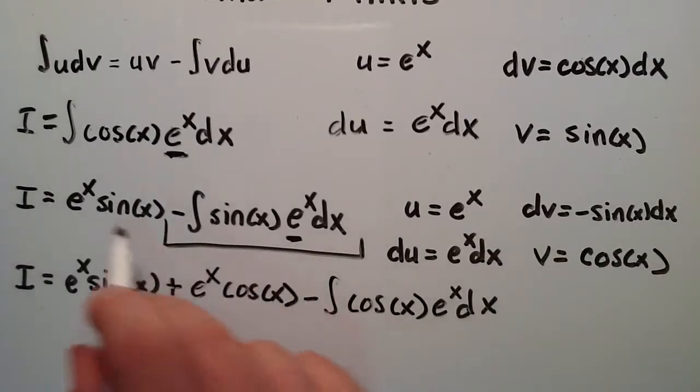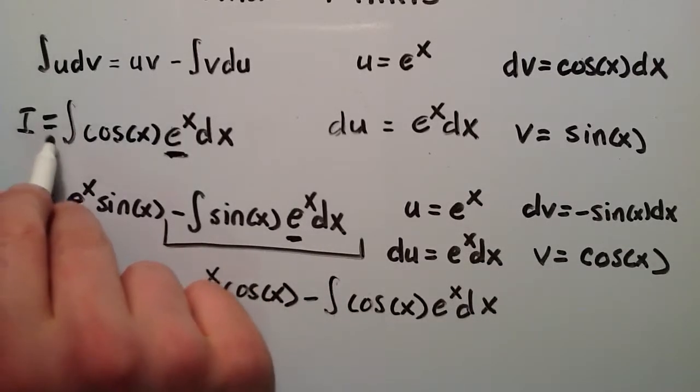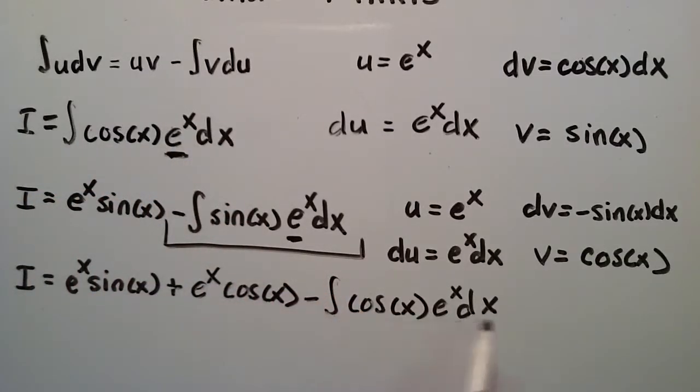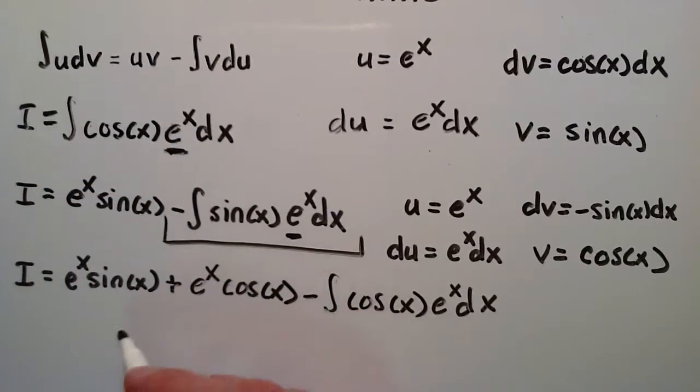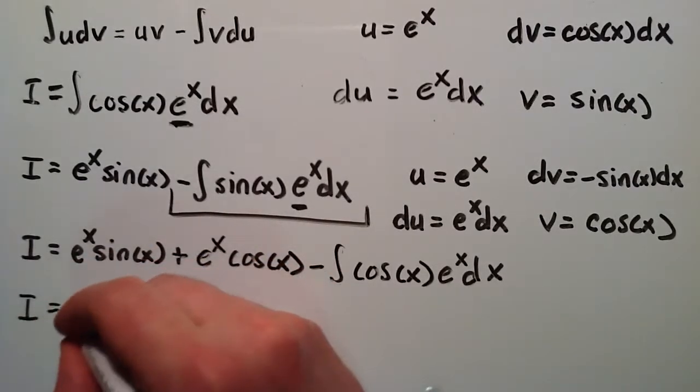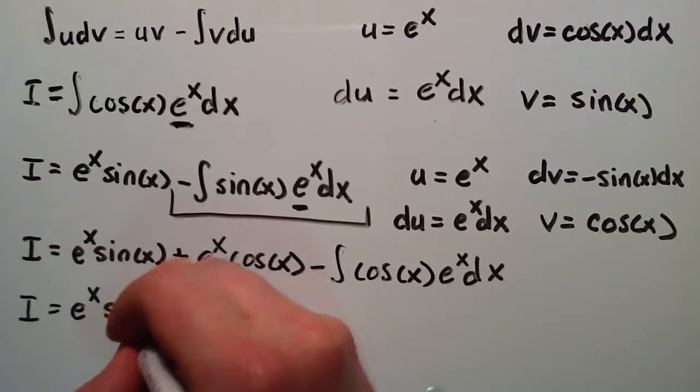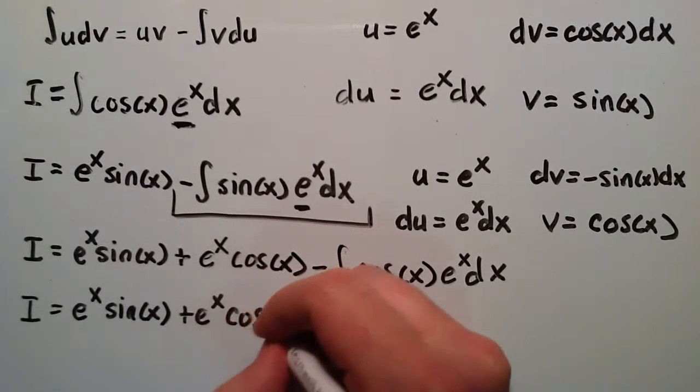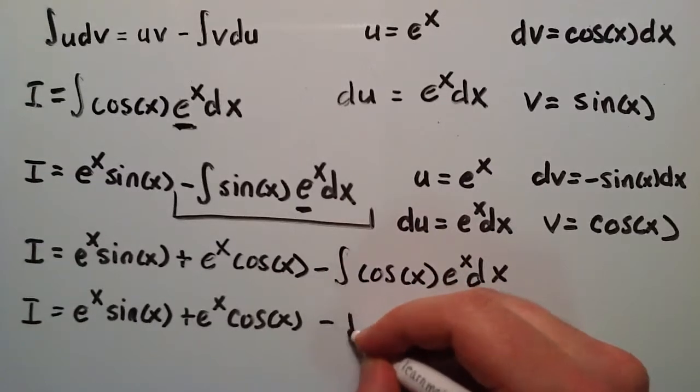And now, if you notice here, we defined i to be equal to the integral of cosine x e to the x dx. And that's exactly what we have down here. So we can rewrite this now as i equals e to the x sine x plus e to the x cosine x minus i.